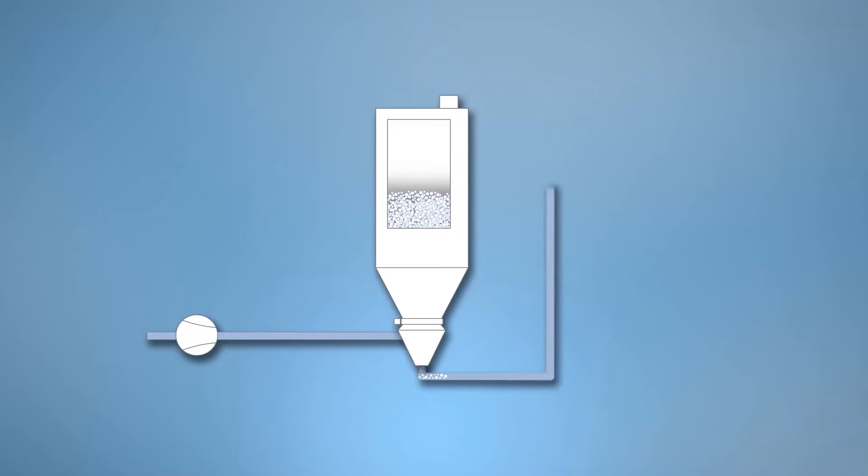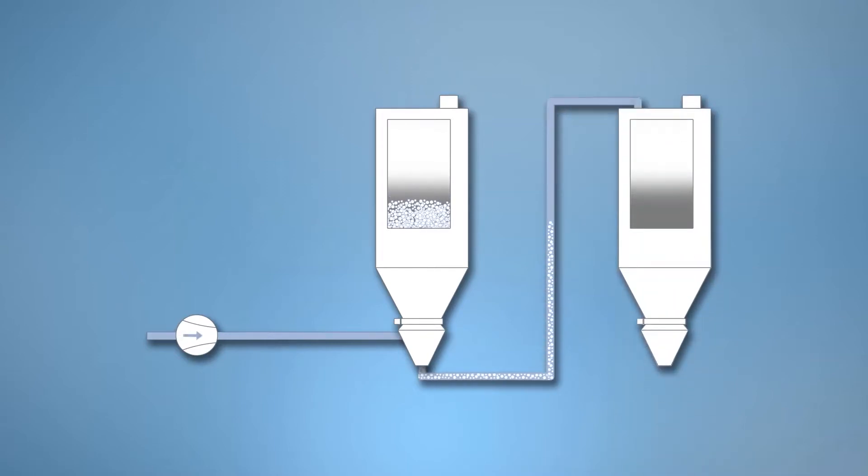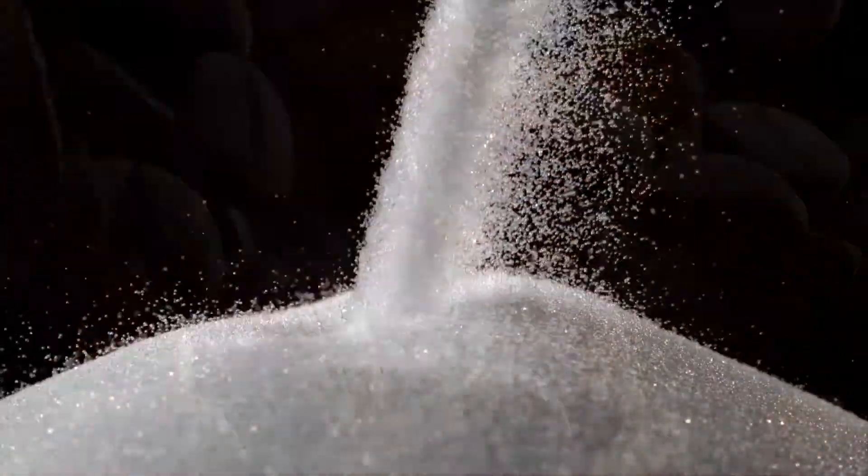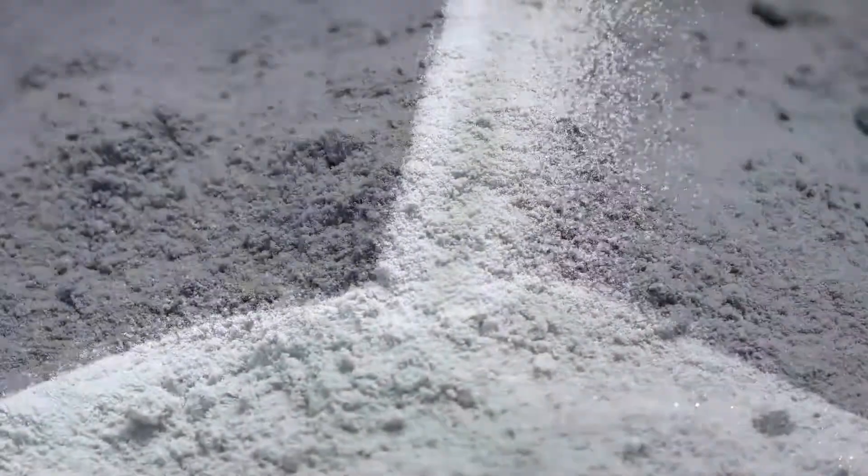Pneumatic conveying is a method to bring material from one silo to the other or from storage tanks to the process. There are many industries using pneumatic conveying. These vary from food and beverage, for instance sugar, chemical industry, rubber industry to power generation.